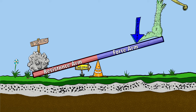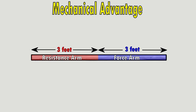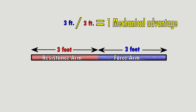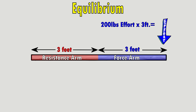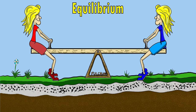The main function of a lever is to gain a mechanical advantage in moving an object or gaining force. Mathematically, mechanical advantage is determined by dividing the force arm by the resistance arm. Equilibrium is achieved when effort times force arm equals resistance times resistance arm. So if the resistance and effort are the same weight and same distance from the fulcrum, nothing will move — like two twins sitting on a seesaw.